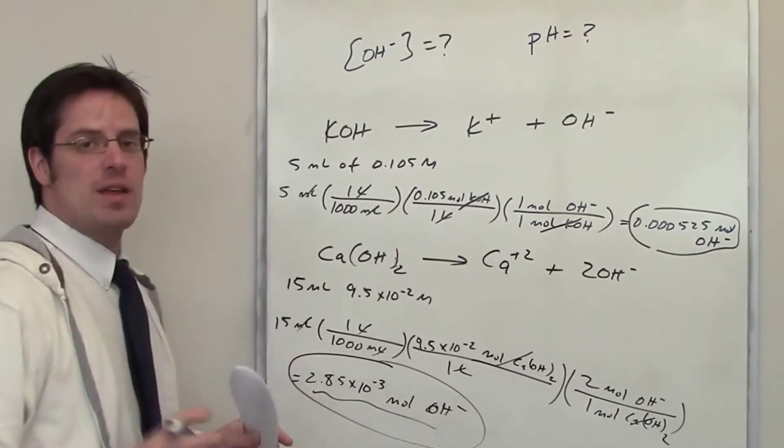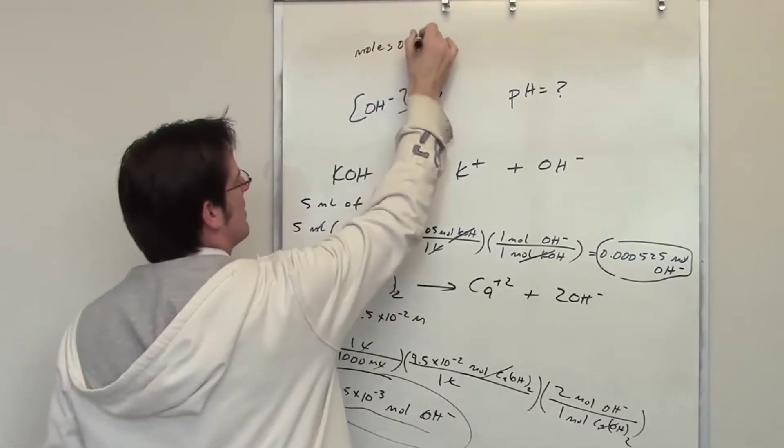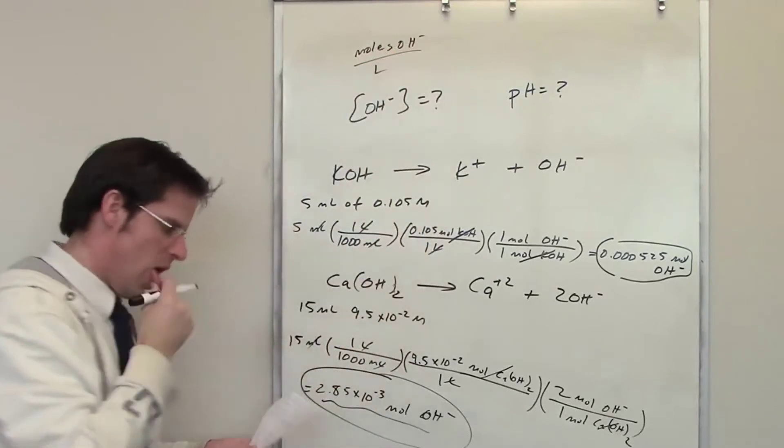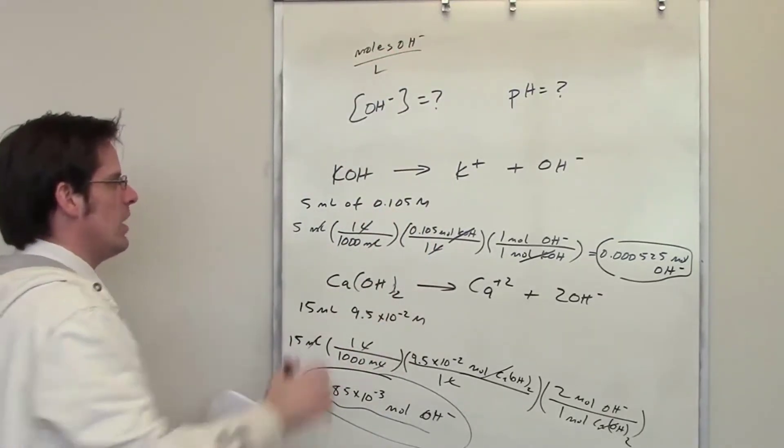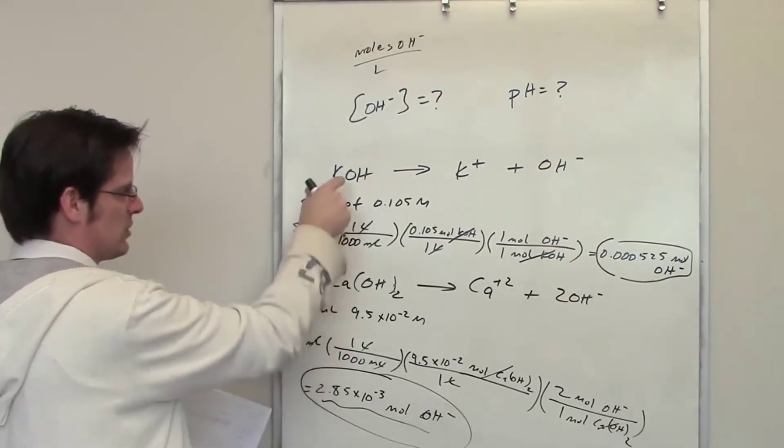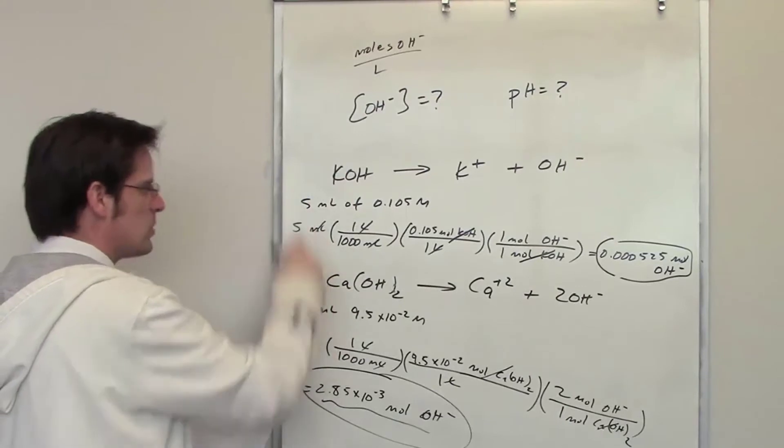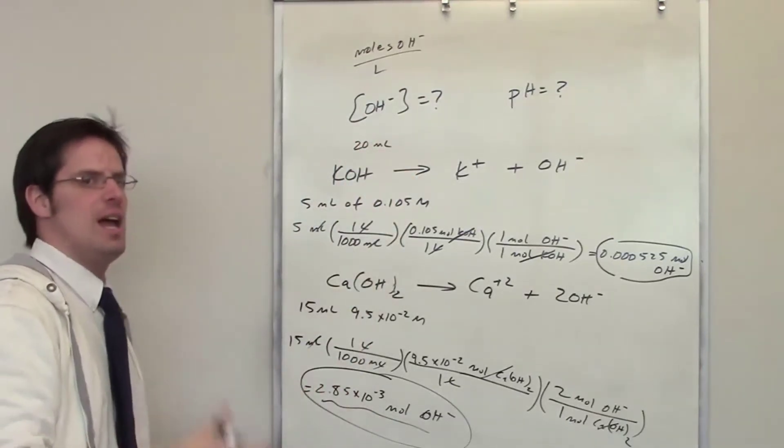Keep in mind now that I want to get the concentration of hydroxide. The concentration is in moles of hydroxide divided by total liters of solution. How many liters of solution have I thrown together here? Well, I've got 5 mL from this stuff and I've got 15 mL of that stuff. So I add those two together, that's 20 mL total of solution.